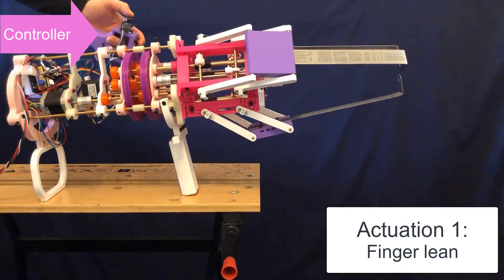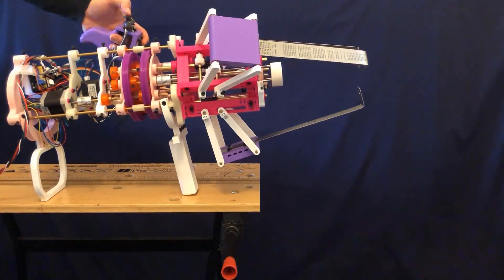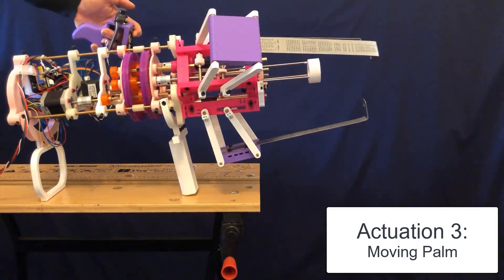The gripper has three actuations: firstly finger lean, then finger tilt, and then the movable palm.